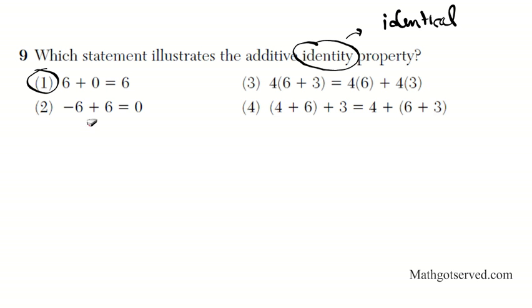Let's take a look at option 2. Negative 6 plus 6 equals 0. This is known as the additive inverse. If you add something to a number and get 0, that is the additive inverse property. And this problem here, you see that 4 is being distributed to two quantities. So this one is known as the distributive property.